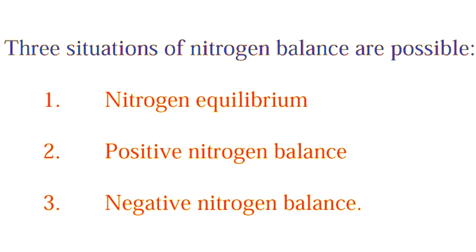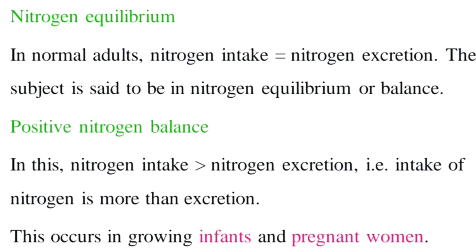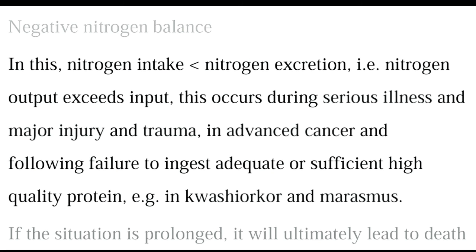Nitrogen balance is maintained such that nitrogen intake and nitrogen excretion are equal. Considering nitrogen intake and excretion, there are three possible situations: nitrogen equilibrium, positive nitrogen balance, and negative nitrogen balance. Nitrogen equilibrium is a condition in which nitrogen intake equals nitrogen excretion. Positive nitrogen balance indicates that nitrogen intake is greater than excretion, seen mainly in infants and pregnant women. Negative nitrogen balance indicates nitrogen intake is less than excretion, seen in conditions like advanced cancer, major injury, trauma, and kwashiorkor/marasmus.